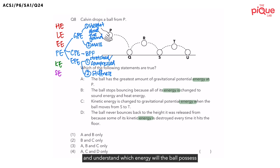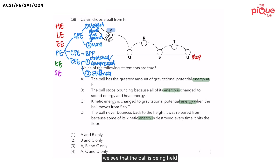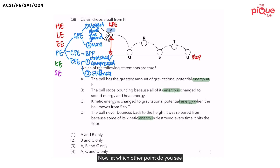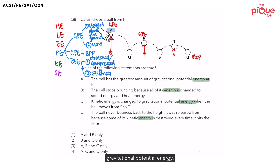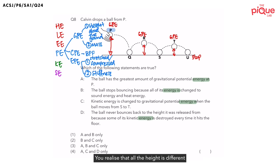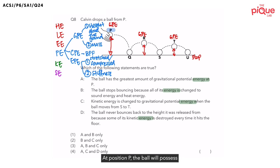Now we can look at the diagram and understand which energy the ball possesses as it is dropped from P and bounces all the way until U where it stops. At position P, before the ball is dropped, it is held at a height above the ground — a big clue. So the ball possesses gravitational potential energy. The ball also has gravitational potential energy at R and T, but the heights differ across P, R, and T, affecting the amount of gravitational potential energy. At position P, the ball possesses the most gravitational potential energy because it is at the highest height above the ground.